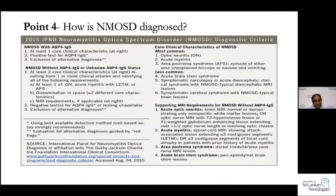Regarding how to diagnose NMOSD: the best way is to get the antibody test done. The current 2015 criteria from the International Panel for Neuromyelitis Optica Spectrum Disorder list six core clinical features: optic neuritis, myelitis, area postrema syndrome, brainstem syndrome, narcolepsy, and the cerebral syndrome. The three most common are optic neuritis, myelitis, and area postrema syndrome. In antibody-positive patients, at least one core clinical criterion is needed for diagnosis.